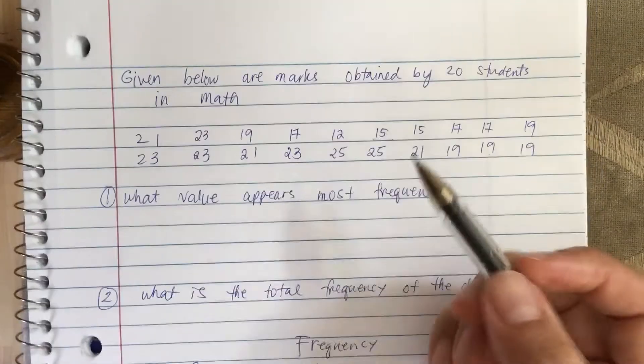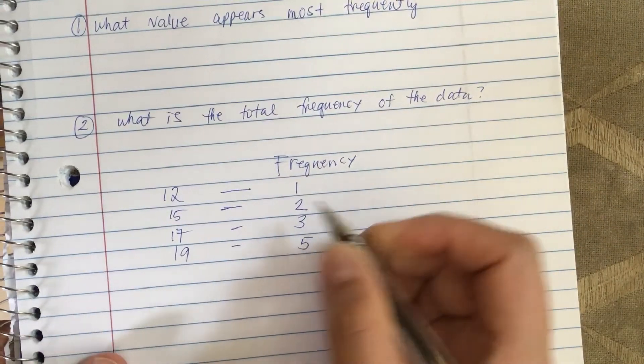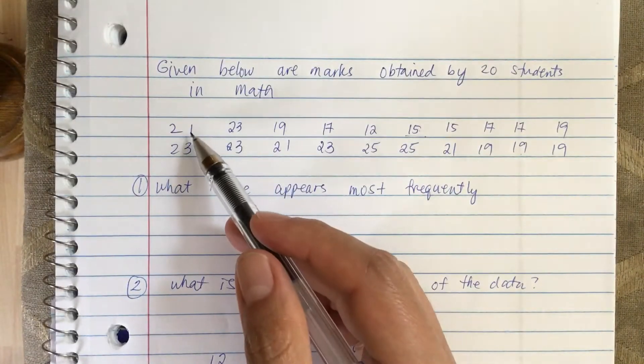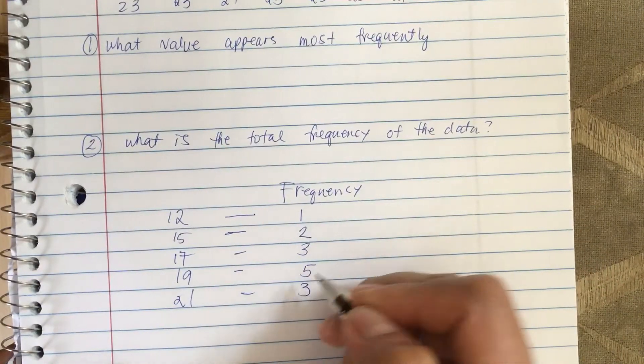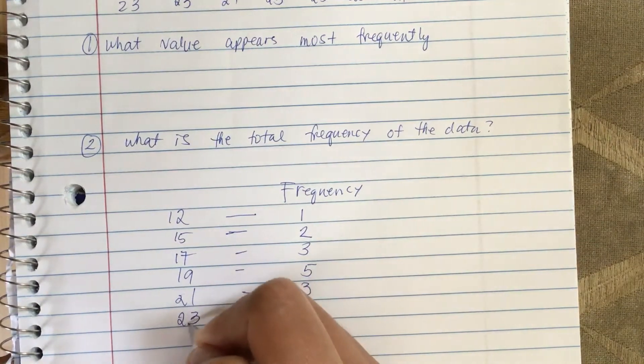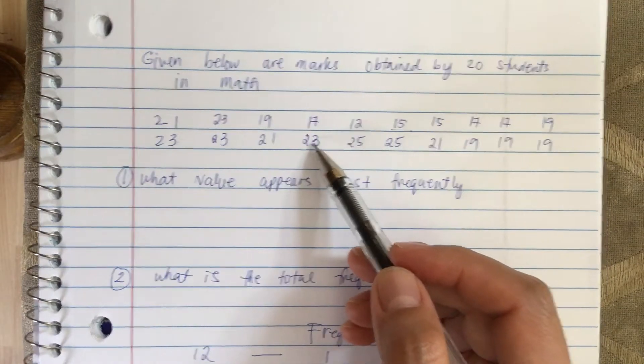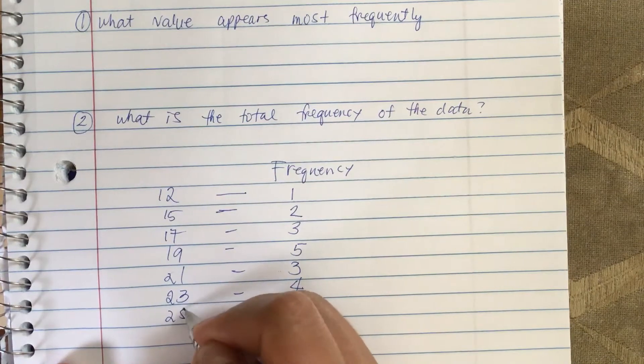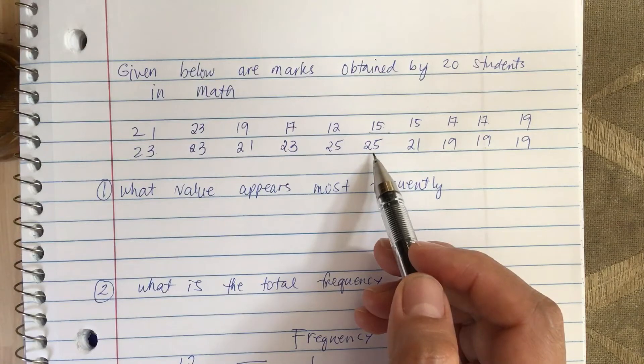Next one is 19. Now how many 19s? One, two, three, four, five. And the next one is 21, so how many 21? We got one, two, three of them. Then the next one is 23. So how many 23? Well, one, two, three, four of them. And then the last one is 25. So how many 25s? We have one and two, so two.